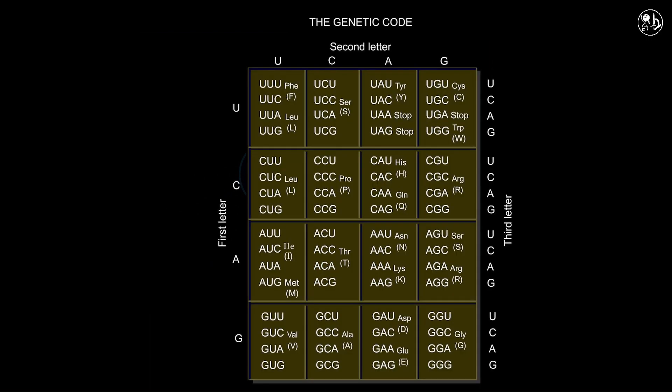The process of elongation persists until the ribosome encounters one of the three stop codons: UAG, UAA, or UGA. Stop codons differ from other codons as they do not correspond to any amino acid. Hence, no standard tRNAs possess anticodons that are complementary to those stop codons.